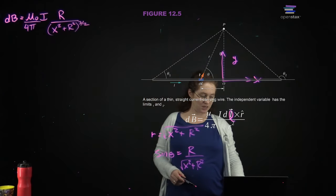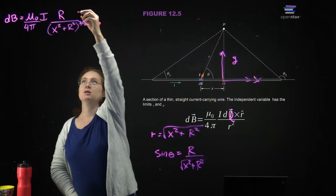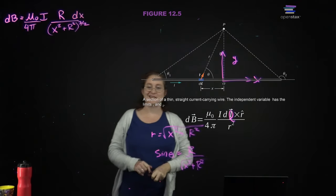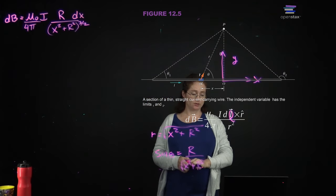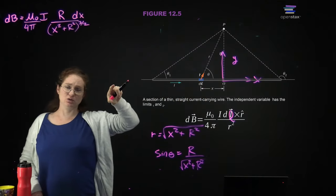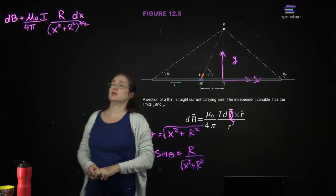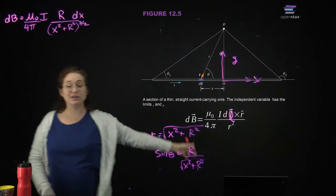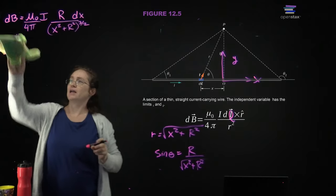And then I need my small segment DL, which is just DX. Now I have it written in Cartesian coordinates. This is written as — if you have two angles theta 1 and theta 2 — that makes it harder to consider. We're just going to consider what happens with an infinitely long wire, which is a really good approximation for several different physical situations.